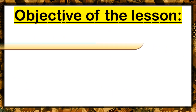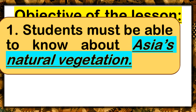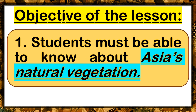For the objective of our lesson today, students must be able to know about Asia's natural vegetation. At the end of our lesson, I already expect that most of you will already know about the different natural vegetation that can grow in the continent of Asia.